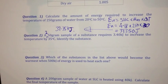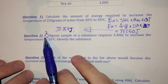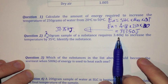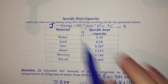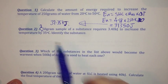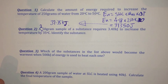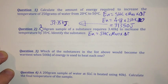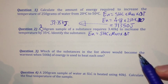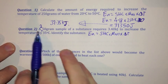Let's have a look at the next question. A 250 gram sample of a substance requires 3.4 kilojoules to increase the temperature by 35 degrees Celsius. What is the substance? Once again, this question mentions a temperature increase and energy, so I need to use the equation. Every time I do a calculation, I always write down the formula I'm using — same as maths, same as physics. Always write down the formula to show your working out.